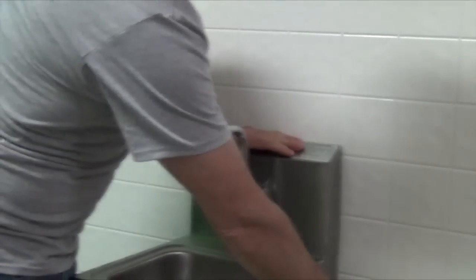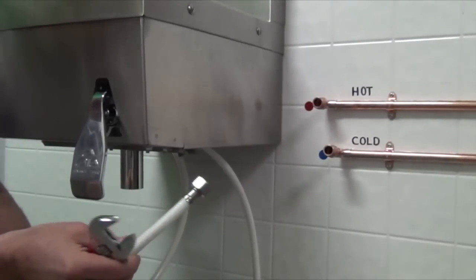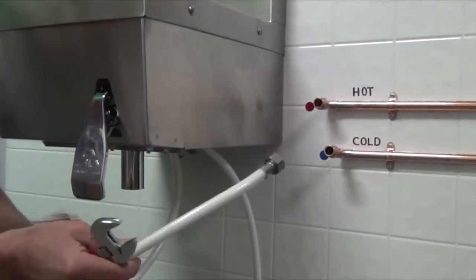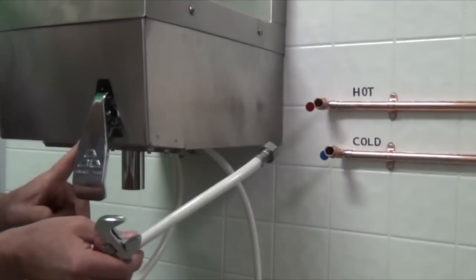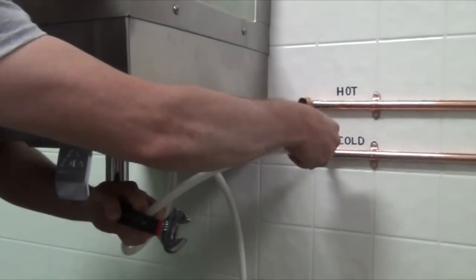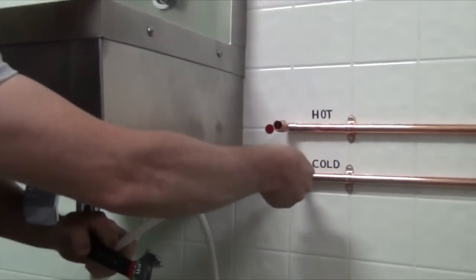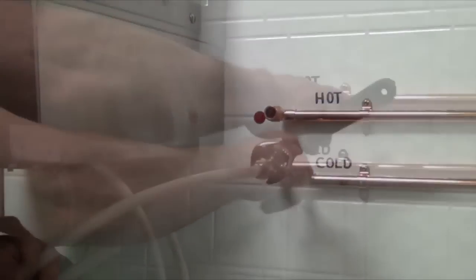We are now going to install the cold water supply. Note when facing the unit, the cold supply is the hose on the left of the valve. Attach the flexible hose to your incoming cold water supply and tighten it with a wrench.